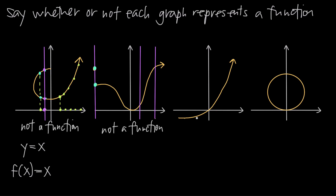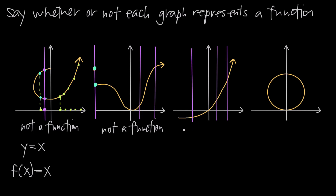What about my third graph? If I try to draw vertical lines — I can draw them anywhere I want — each vertical line I draw is only going to intersect the graph at one single point. There's no vertical line I could draw on this graph that would intersect it at more than one point. Therefore, this graph passes the vertical line test, and I can say that this graph represents a function.